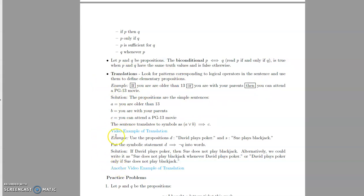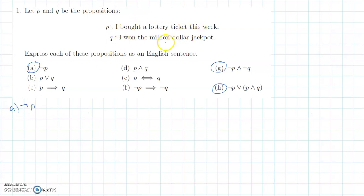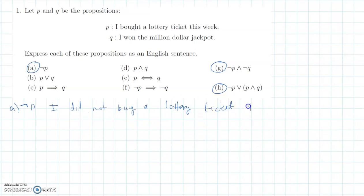Now I'm going to work some practice problems from the notes. For problem A, I have NOT P. I'm taking P — which is 'I bought a lottery ticket' — and translating NOT P into English: 'I did not buy a lottery ticket this week.' That's all there is to it.